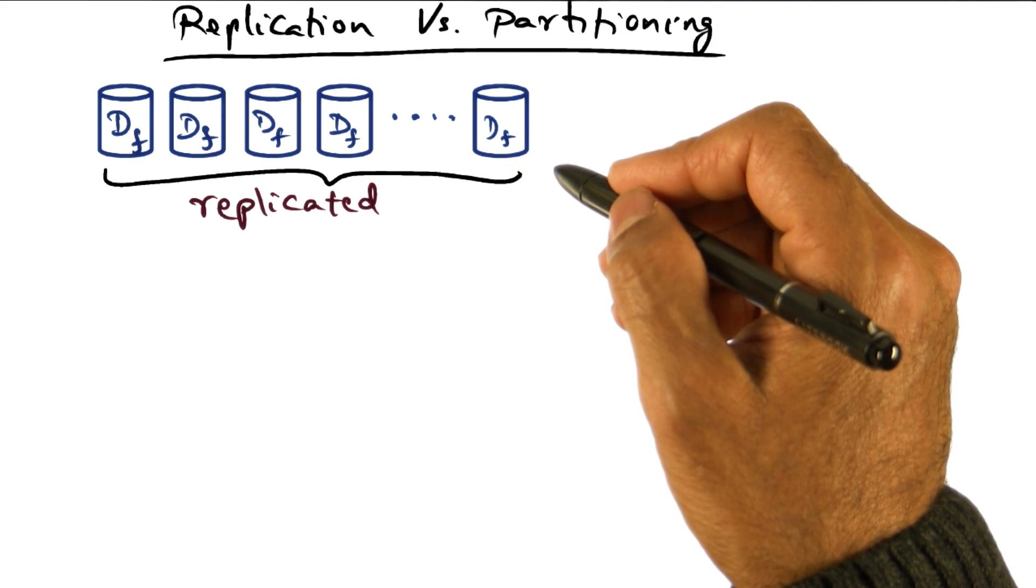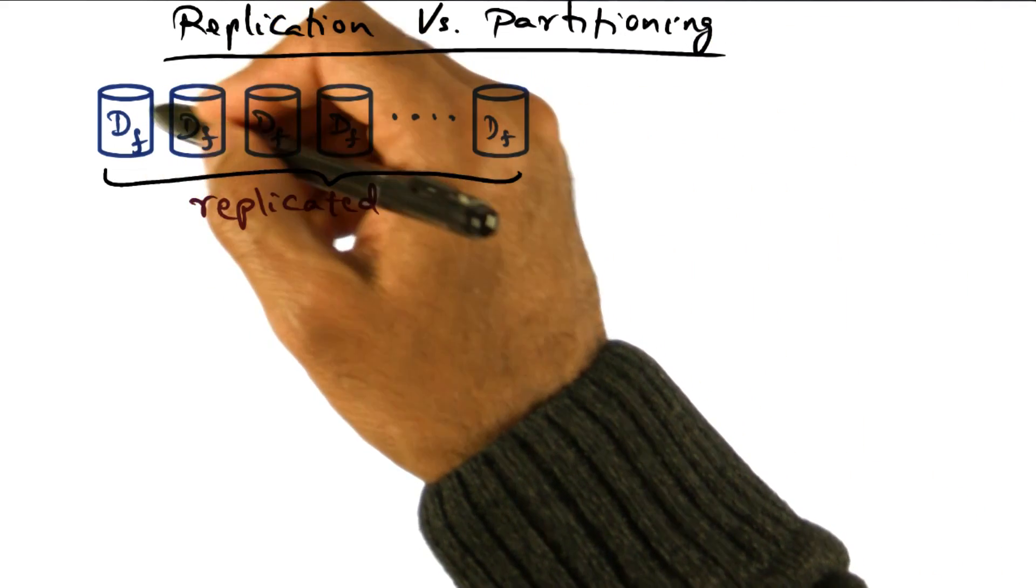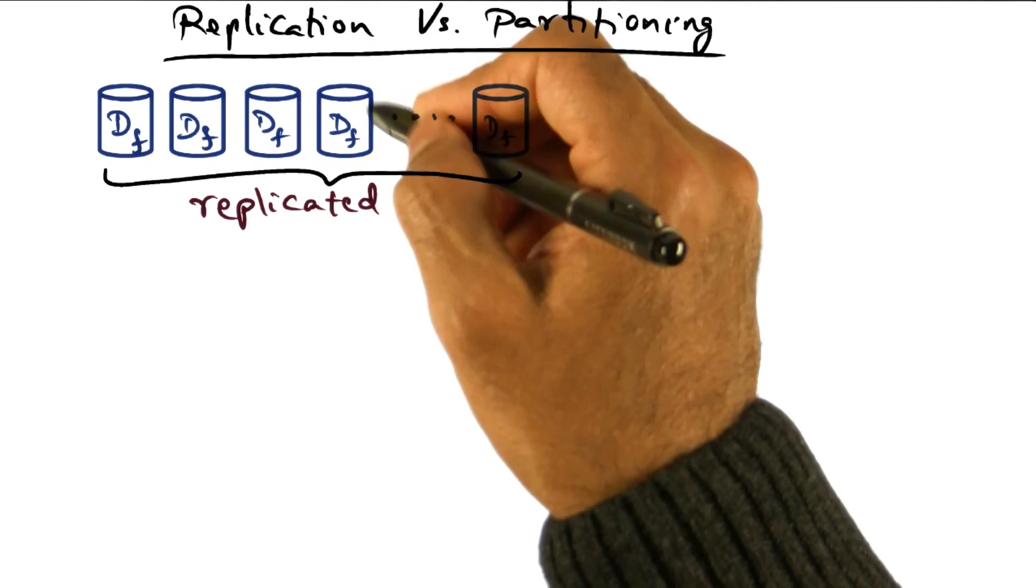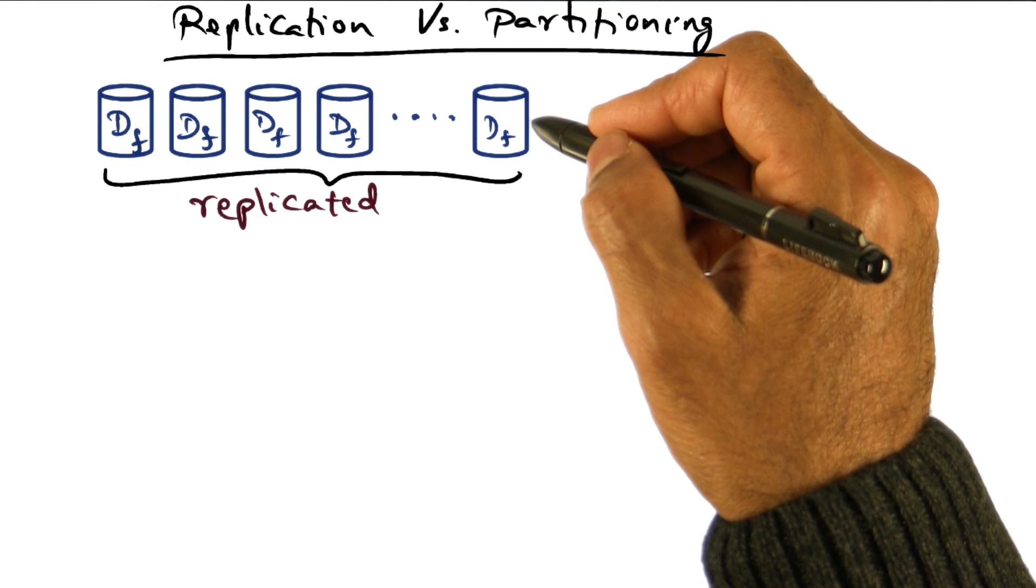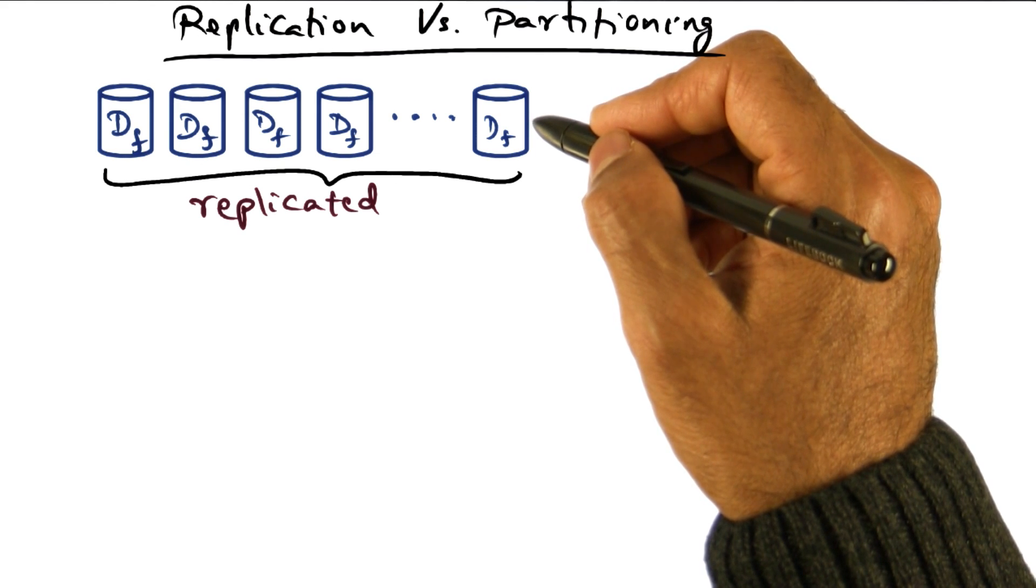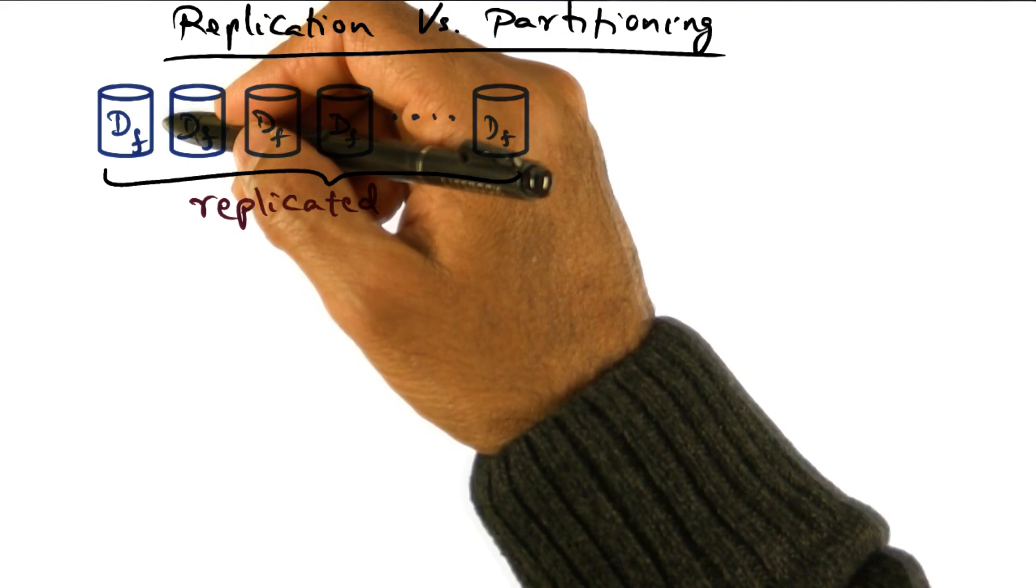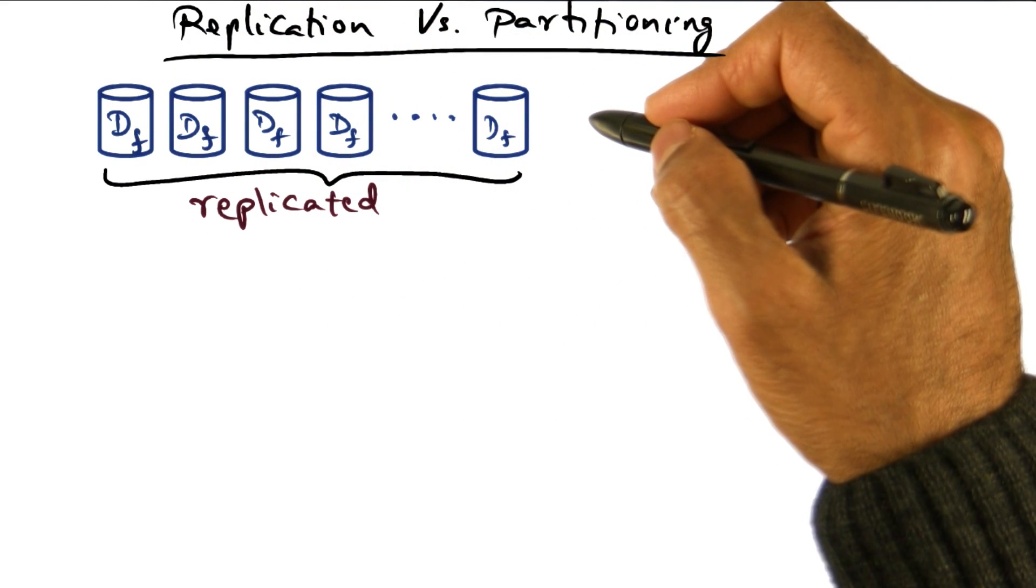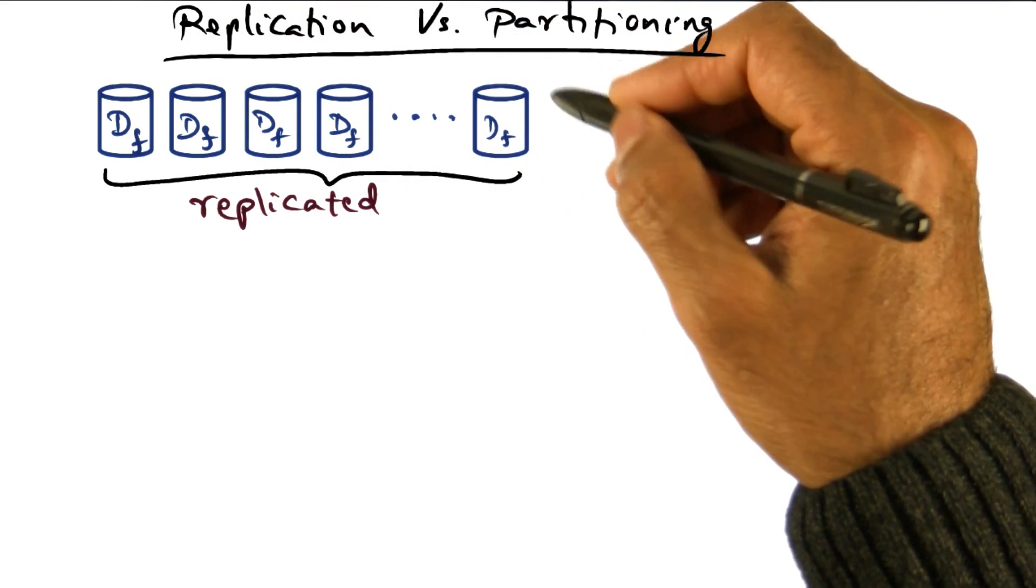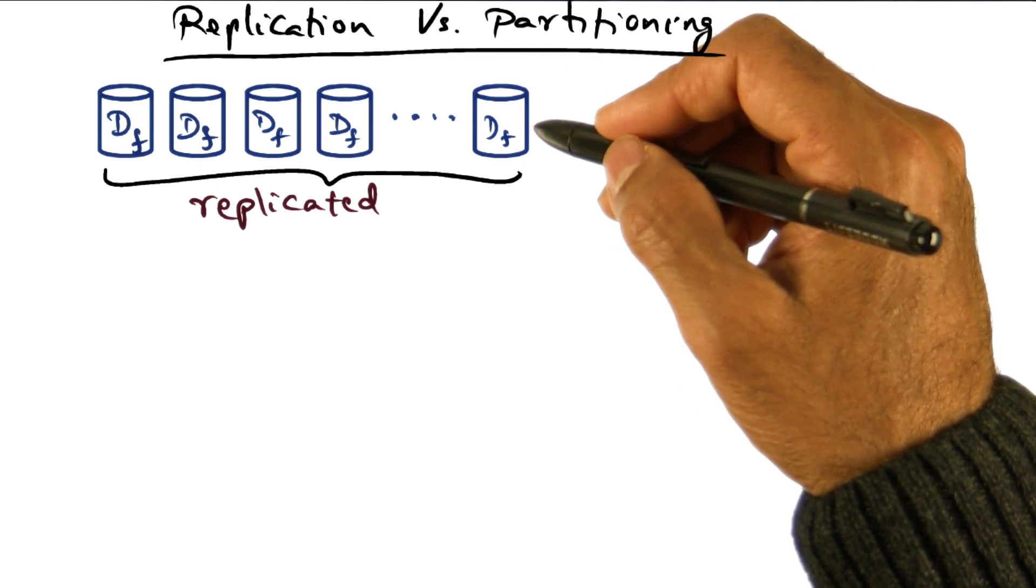If you're replicating the data, that means every data server has the full corpus of data needed to serve a particular request. Think of it as, say, Gmail. If a Gmail request gets sent to any one of these servers, they can handle the request because they have the full corpus of data to deal with the incoming request.